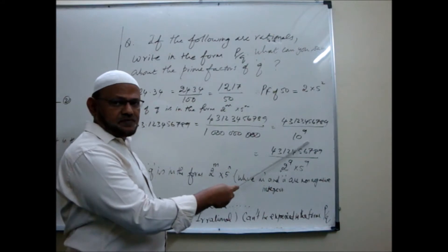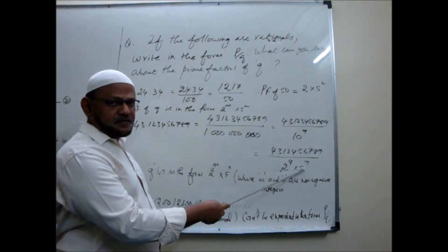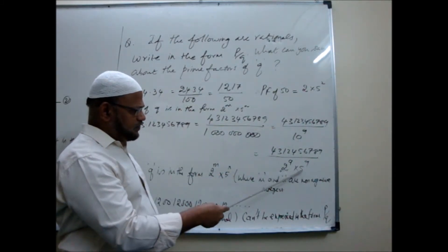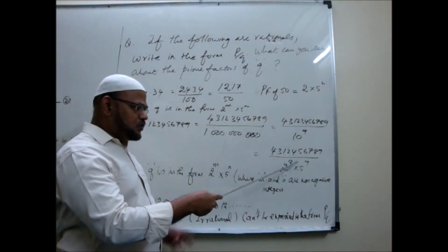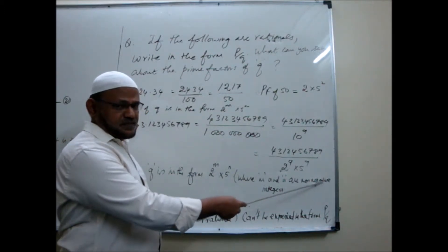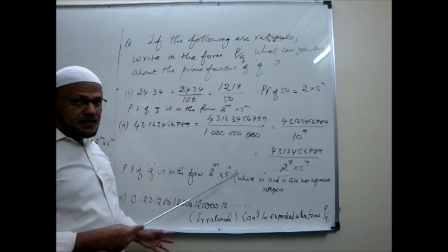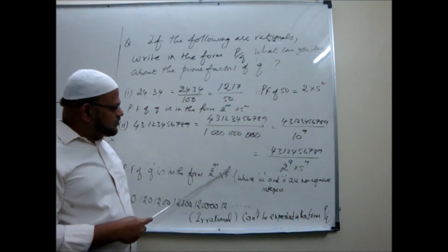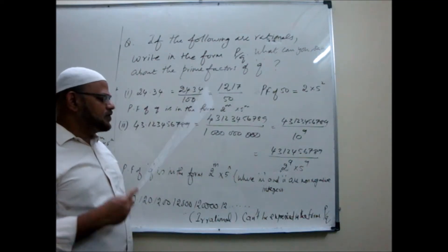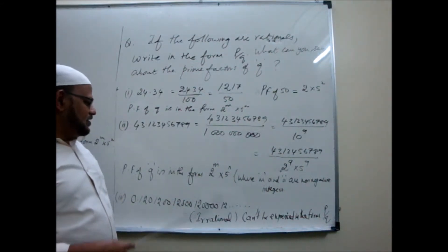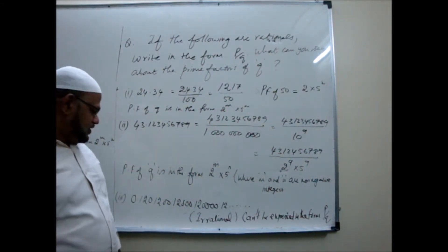So leaving the decimal point, you are writing 43123456789 divided by 1 billion. 1 billion, 1 followed by 9 zeros. That you can write 10 to the power 9. 10 is 2 into 5, so 2 power 9 into 5 power 9. Which form is this? 2 to the power m, 5 to the power n, where m and n are non-negative integers. Means they are whole numbers. Suppose only 2s are there, 5s are not there, so this is 5 power 0 it will be.